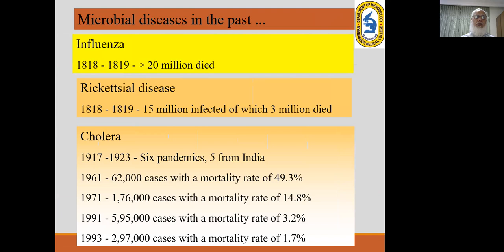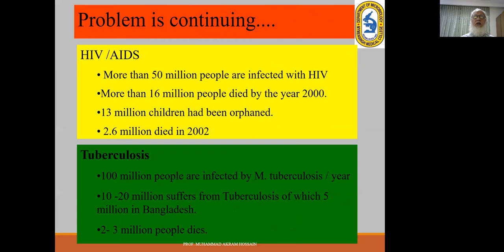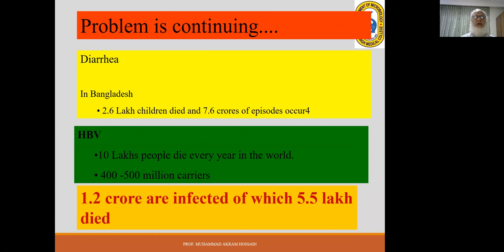During the 1960s, the mortality rate from cholera was about 50%, but by 1993 it dropped to less than 2% due to the discovery of oral saline. HIV-AIDS was discovered in 1986, and by the year 2000, 50 million people had been infected and more than 16 million had died. Tuberculosis infects 100 million people every year, and in Bangladesh 10 to 20 million suffer from TB, with 2 to 3 million dying. Hepatitis B virus has 400 to 500 million carriers, and 10 lakh people die every year.